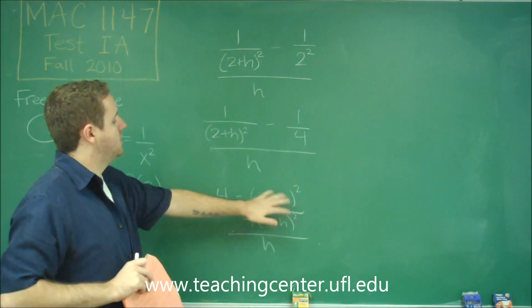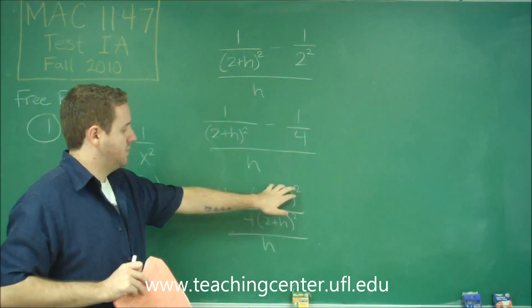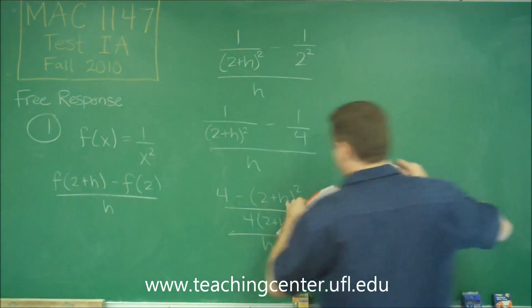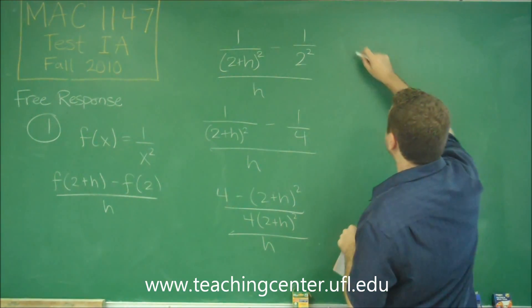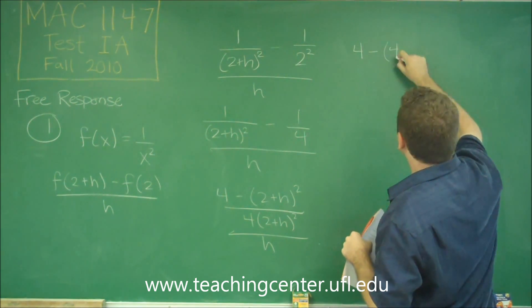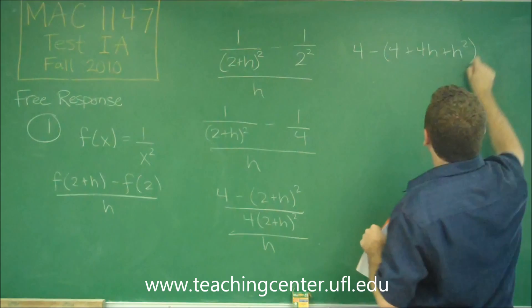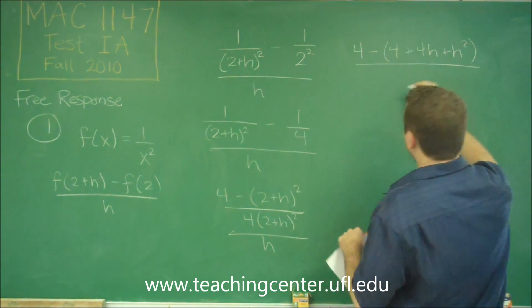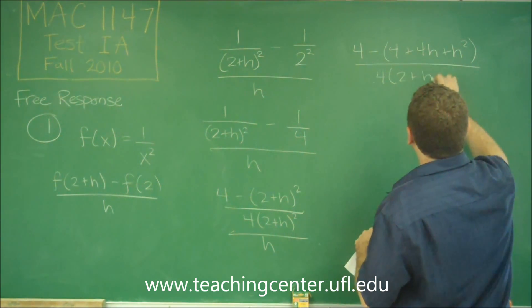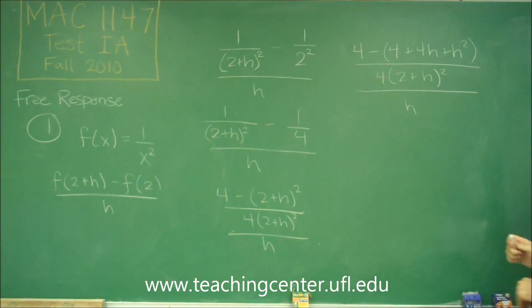Now we want to try to simplify this. This can be combined once the squared term is expanded, since we have a subtraction sign in front of it. We want to expand (2 plus h) squared and we'll get 4 plus 4h plus h squared. That's all over 4 times (2 plus h) squared, which is all over h.